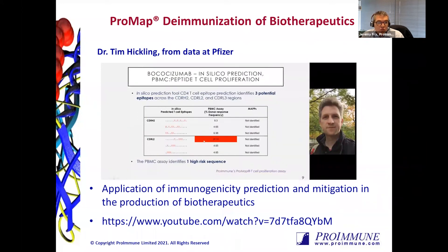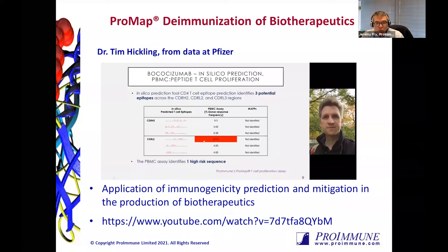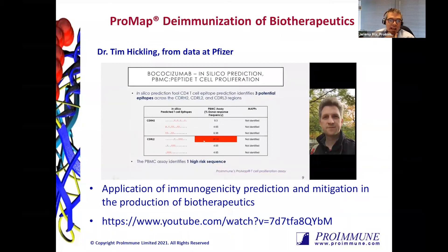Sometimes in silico tools don't always come up trumps. Interestingly, these are some sequences that were run in silico and identified some potential epitopes. But when you look at the reality in antigen presentation assays and T-cell proliferation assays, sometimes there's over-prediction. The benefit of actually running these assays is that you can really understand what the problem sequences actually are. In this case, there was one sequence that gave a response rate of 21% in those donors.